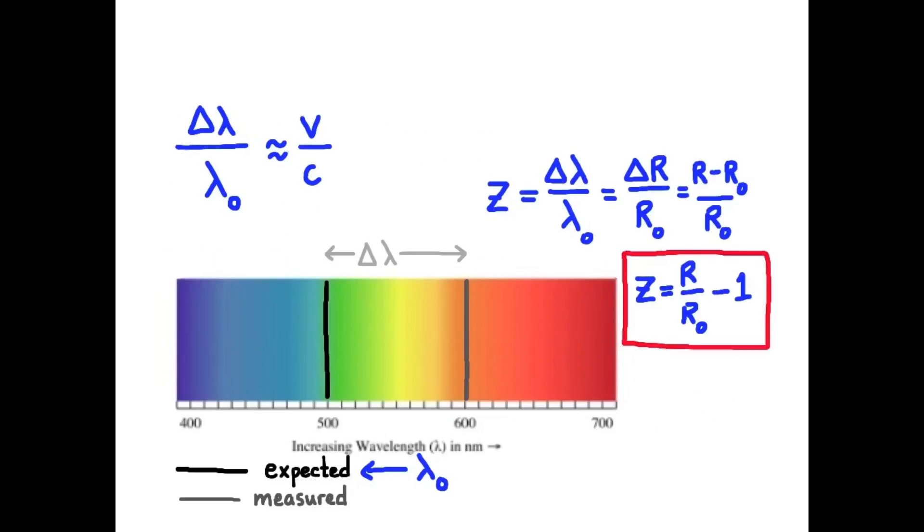Space expands and the wavelength of the radiation increases by an amount delta lambda. Lambda nought is the wavelength of the photons when they're originally emitted. The Doppler equation, delta lambda over lambda nought equals v over c, still applies, and it applies without the constraint that v must be much smaller than c, since space is expanding here.